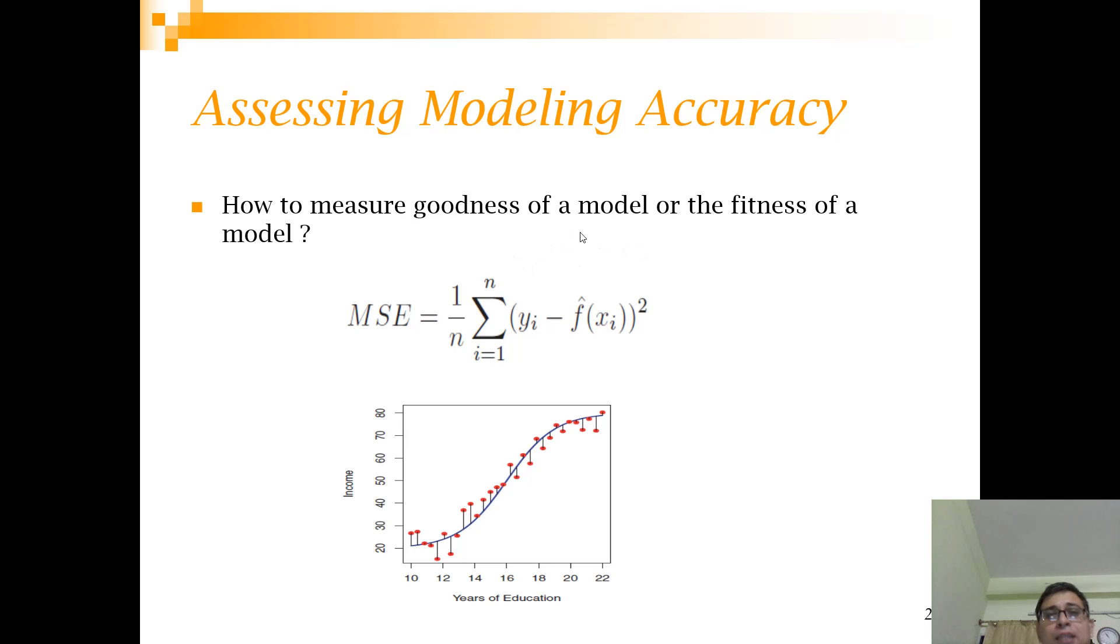Alright so yi minus f bar xi is called the error. And as you take a square of the same then that's why you call it squared error and finally you are taking a mean of it. So that's why you call this term mean square error. Now if you look at this line, these projections from the red circles - the red points are the actual points and this blue line or blue curve is your model. Essentially these projections are the errors. So what you want is you want the errors to be minimized.